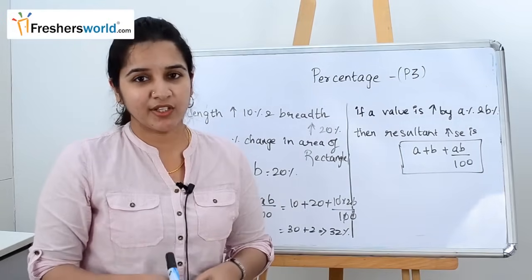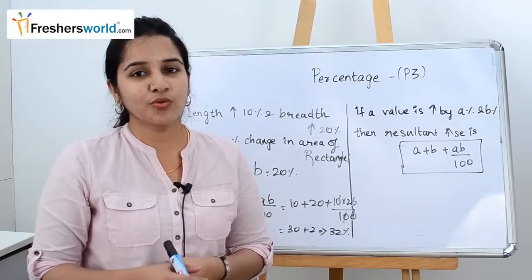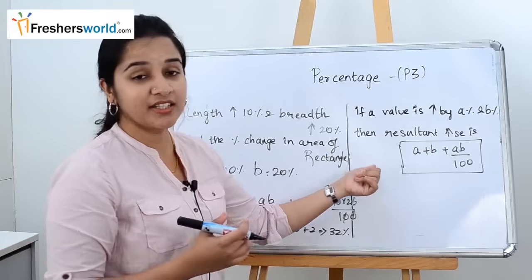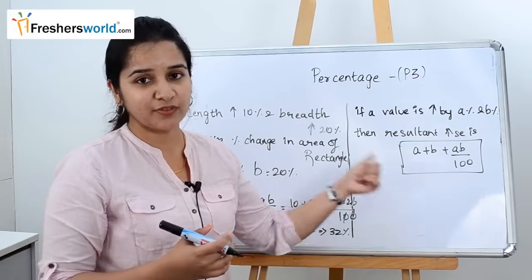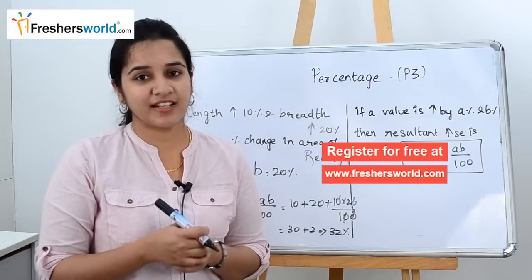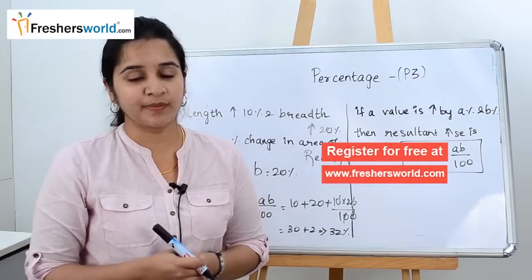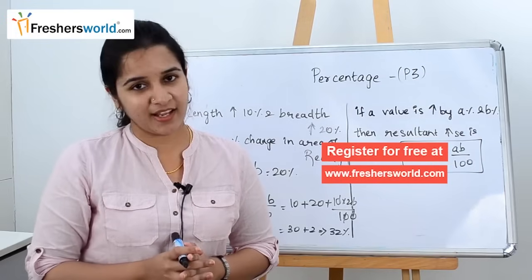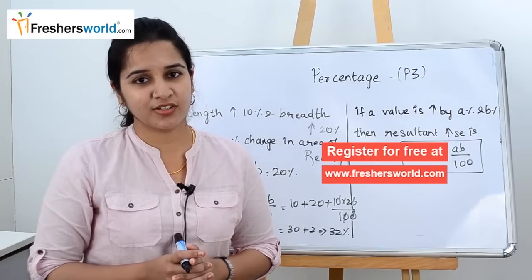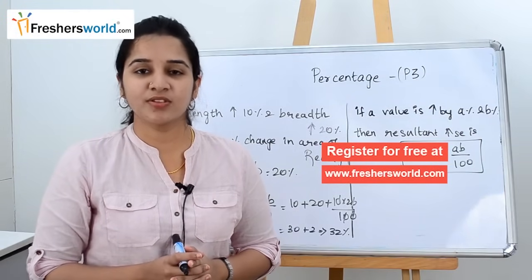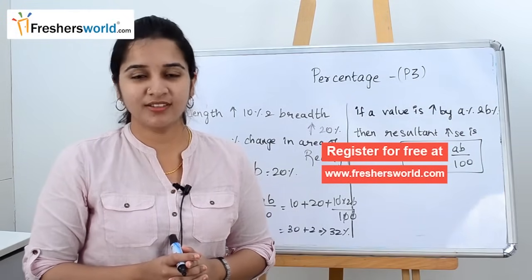In today's video we understood two concepts: finding the change in expenditure using the rate and consumption formula, and the percentage change formula A + B + AB/100. If you are looking for a job, register at freshersworld.com. Please like this video and subscribe to our channel.